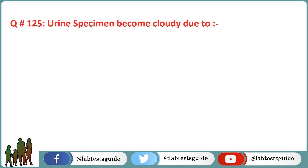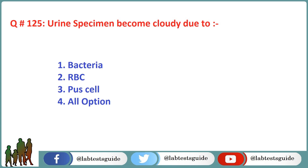The next question is 125: Urine specimen becomes cloudy due to? Option 1: Bacteria. Option 2: Urinary casts. Option 3: Pus cells. Option 4: All options. The correct answer is Option 4: All options.